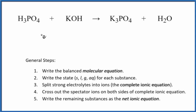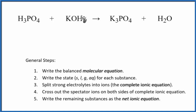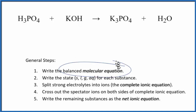In this video, we'll write the balanced net ionic equation for H3PO4 plus KOH. This is phosphoric acid, and this is potassium hydroxide. With net ionic equations, we have to balance the molecular equation first. This is the molecular equation.